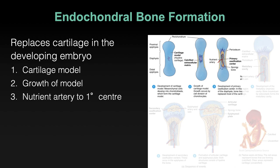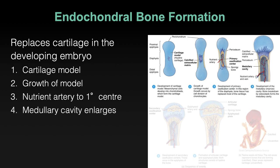You can see a nutrient artery starting to pierce the bone in the middle. The cartilage is growing; there are chondrocytes starting to release the extracellular matrix. The nutrient artery allows osteocytes, osteoblasts, and progenitor cells to arrive — those are the cells that will eventually build bone — and it penetrates right in the middle and starts to spread outwards.